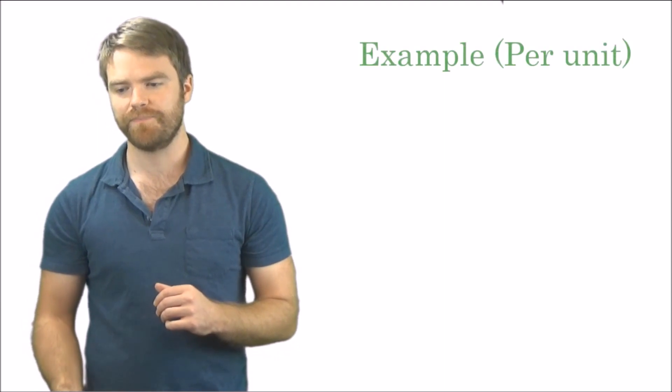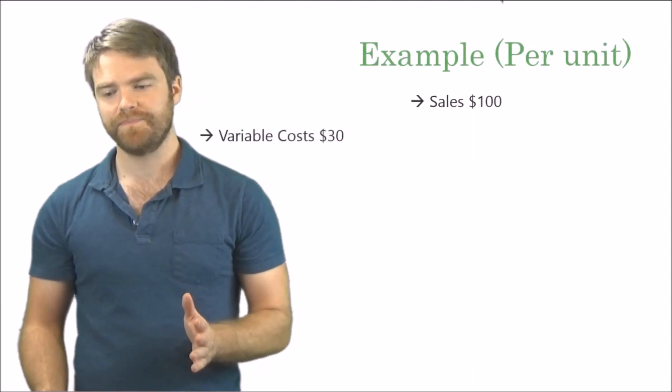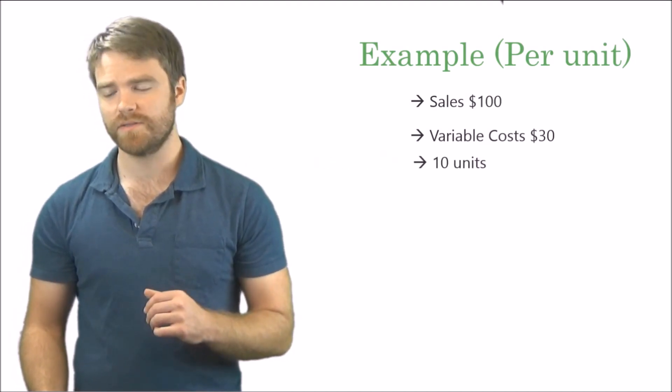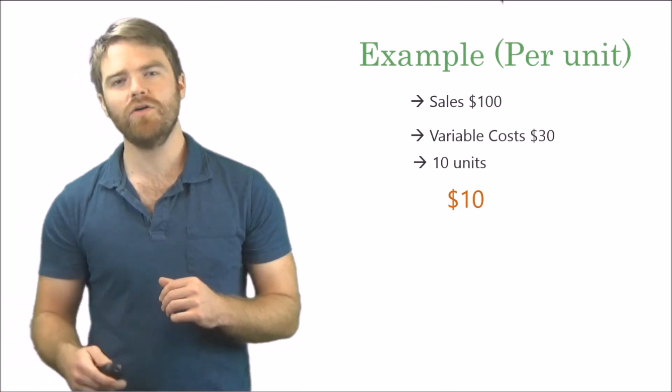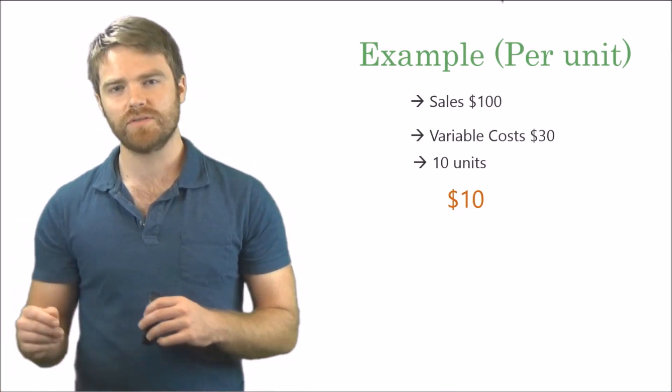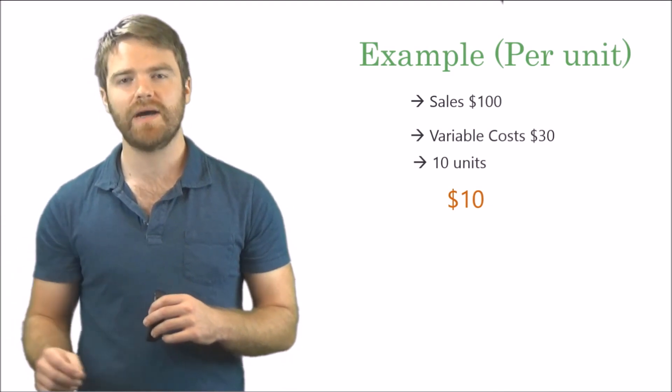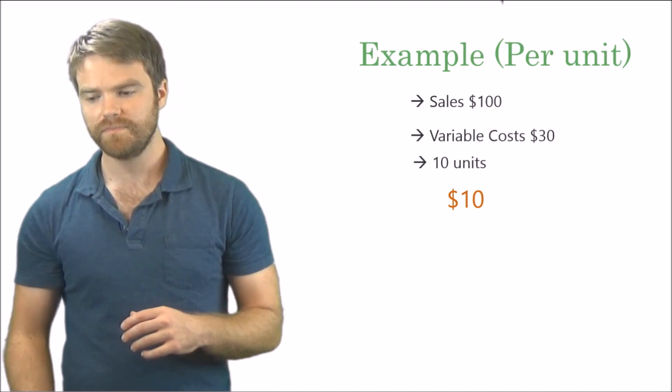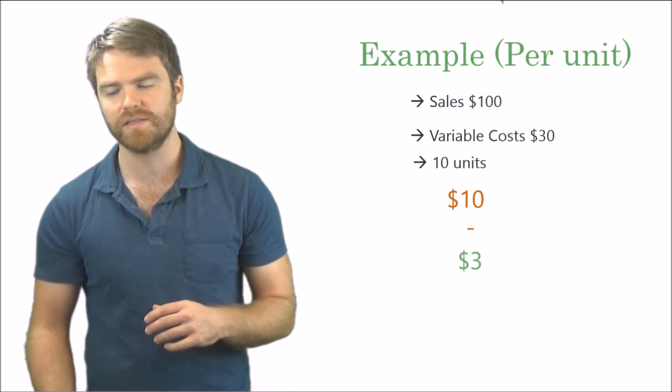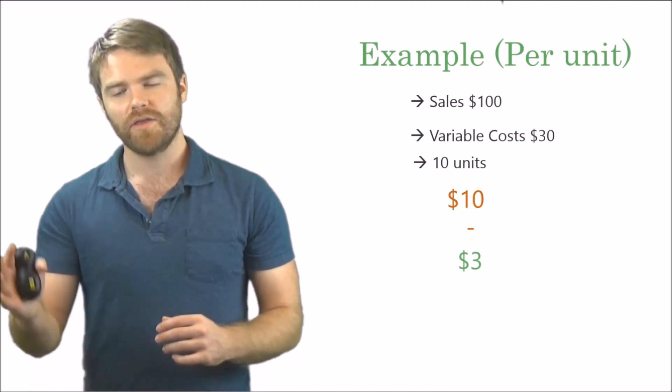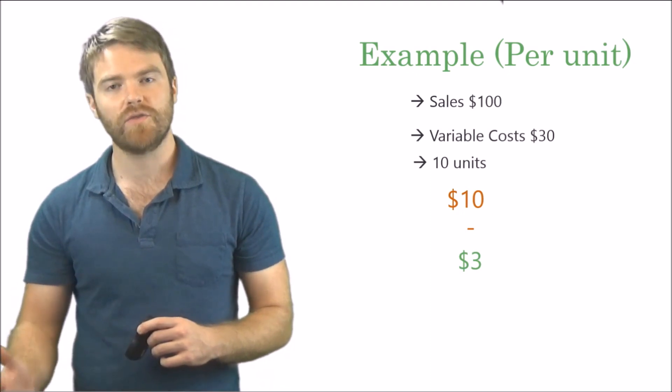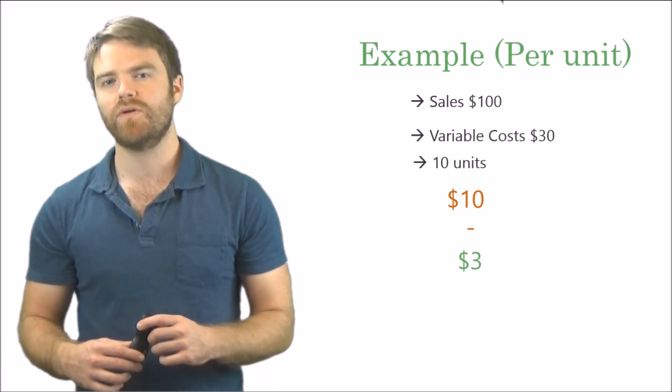Now let's try it in a per unit example. Sales of $100, variable costs are $30, units is 10 units. So $10 for sales. How do I get that? $100 divided by 10 units, so I got $10 for sales. And now we're going to subtract once again our variable costs, but it's on a per unit level, right? $30 for variable costs divided by 10 units, so it's going to be $3 a unit for variable costs.